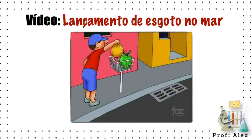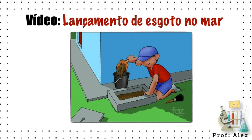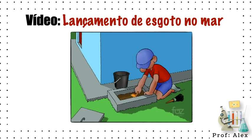Ralo de pia evita que restos de comida cheguem até a rede de esgoto e causem entupimento. Óleo e gordura não devem ser lançados na pia. É importante que a caixa de gordura seja limpa a cada seis meses.